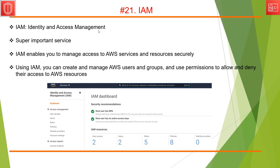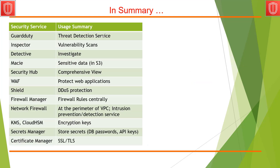Last but not least is IAM — Identity and Access Management. This is a super important service. IAM enables you to manage access to AWS services and resources securely. You can create and manage AWS users, groups, roles, and policies, and create new identity providers. This is the service that everybody uses.